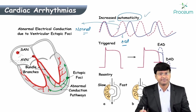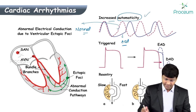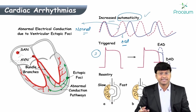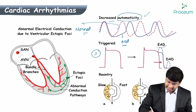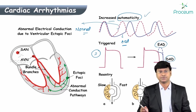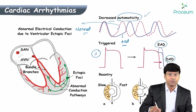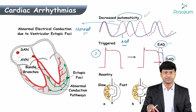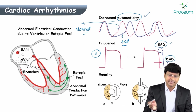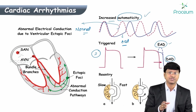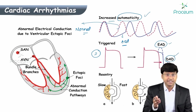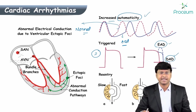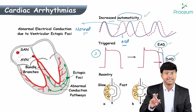The second mechanism for the development of arrhythmia is triggered activity. In triggered activity, the cell undergoes depolarization and during repolarization there is one more impulse. If the triggered activity appears in the early phase after depolarization, it is called early after-depolarization (EAD). If it appears after a delayed time of depolarization, it is called delayed after-depolarization (DAD).